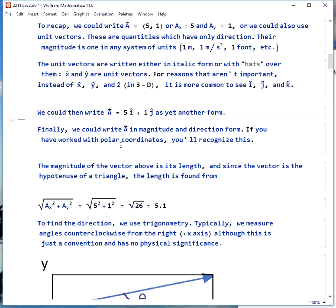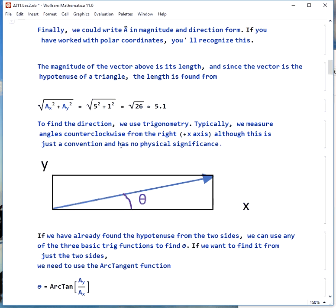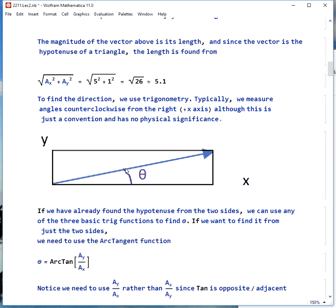The magnitude of the vector is its length, and since the vector is the hypotenuse of a triangle, we can find the length by taking the square root of the sum of the squares of the components. This is just the Pythagorean theorem. We get a length of about 5.1 units.